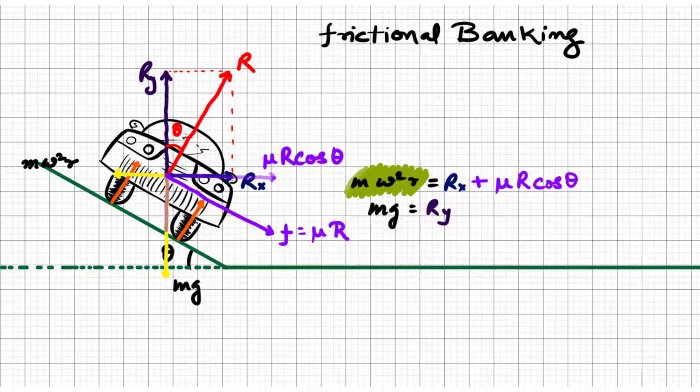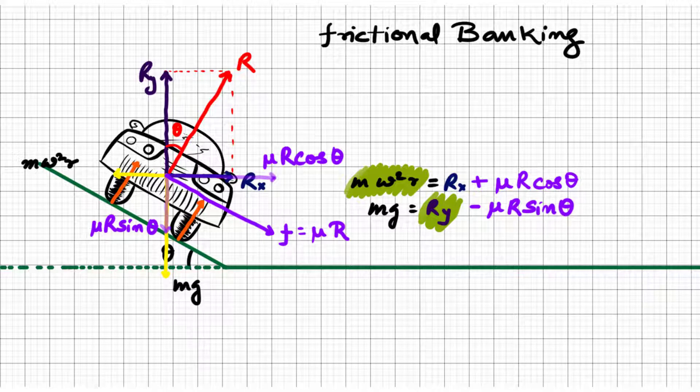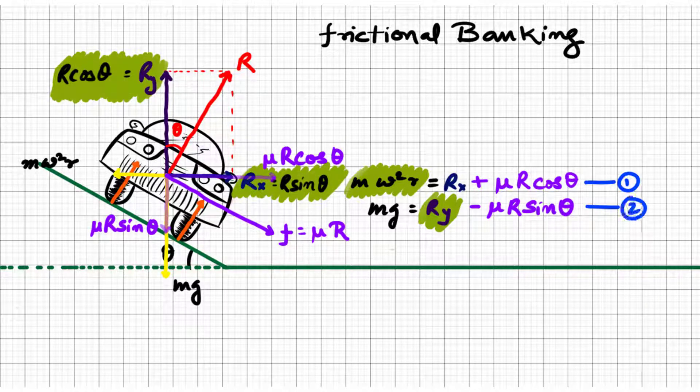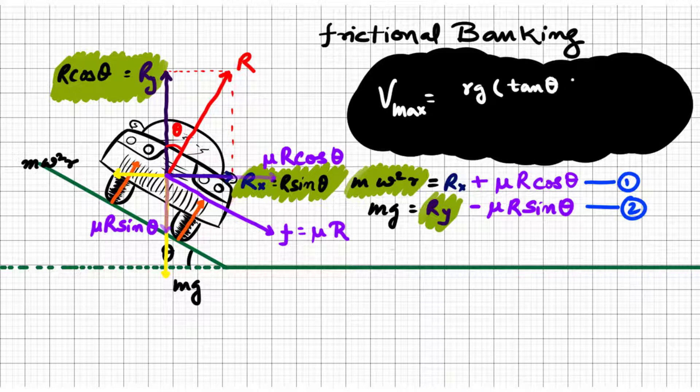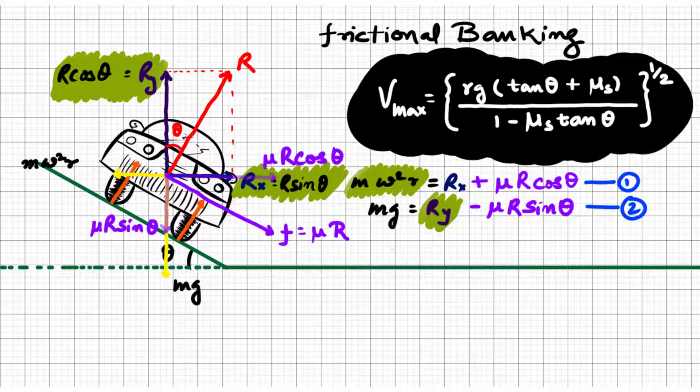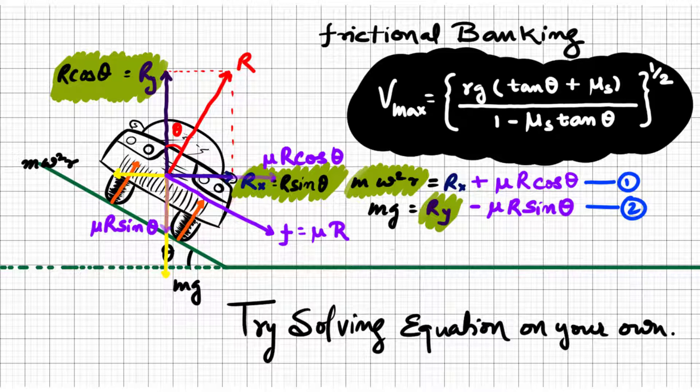And the vertical component of the reaction force will work against the weight and the vertical component of friction. Now these two equations can be solved for calculation of maximum allowable speed. Here the magnitude of the maximum allowable speed also depends upon the coefficient of friction between the tires and the road, along with the radius of the turn and the banking angle.